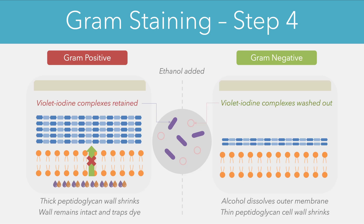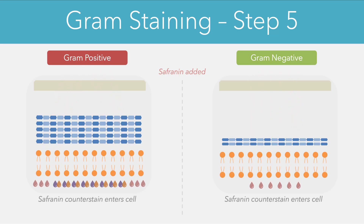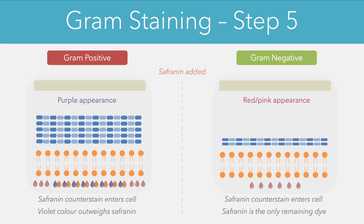To visualize the gram negative cells more clearly, we have a final step which involves adding a counter stain known as safranin. This safranin is a red coloured substance which again diffuses across all of the layers and enters inside both cell types. In the gram positive cells the colour of the crystal violet complexes far outweighs the colour of safranin and these cells remain purple. However in the gram negative cells the safranin is the only dye remaining, and therefore these cells appear red or pink in colour.